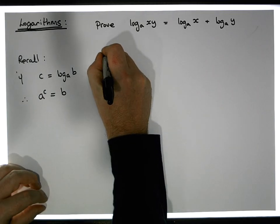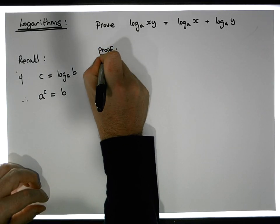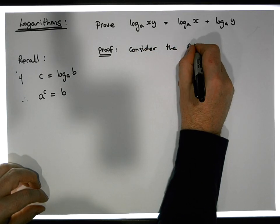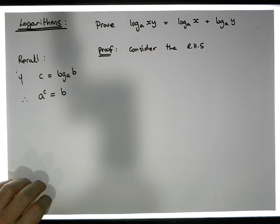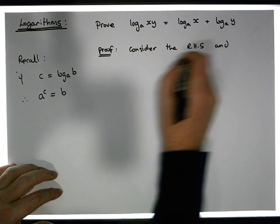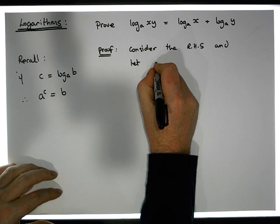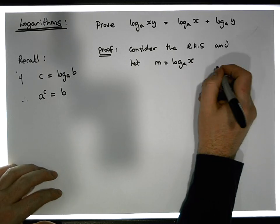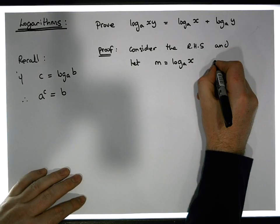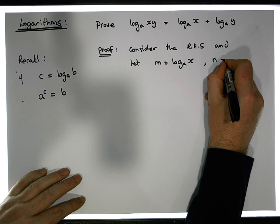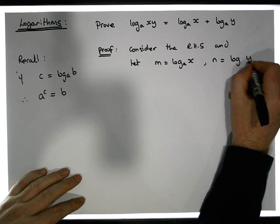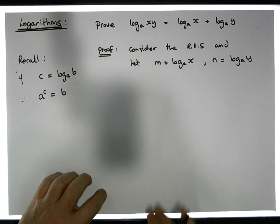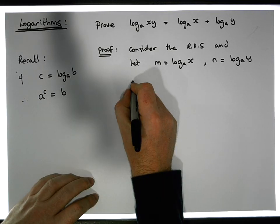Let's consider the right-hand side of this equality and set up our proof. Let m equal the log of x to the base a, and let n equal the log of y to the base a.